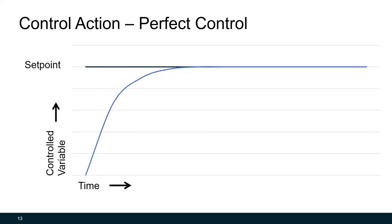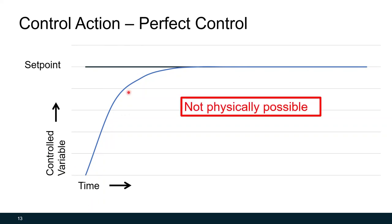Perfect control is the ideal scenario for how we want to control our system. We have our controlled variable — let's say space temperature. Ideally, when our space temperature is much lower than our set point, we would heat the space very quickly, get to our set point, and have it stay there. Unfortunately, this isn't very realistic; it's very difficult to achieve with our sensors, controllers, and control devices. But ideally, this is what we want to accomplish.